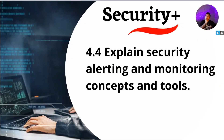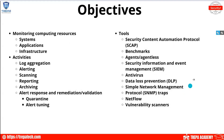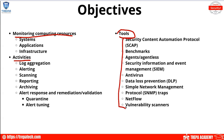Domain 4.4 explains security alerting and monitoring concepts and tools. For our domain 4.4 objectives, we're going to go over monitoring computing resources, the different activities involved in monitoring and alerting, and the different tools available. We'll cover compliance, potential vulnerabilities, and hit on SCAP — the automation protocol used to harden devices to DISA STIGs and standards.